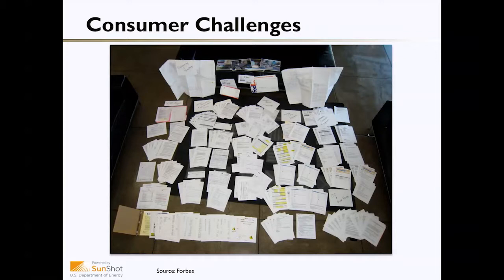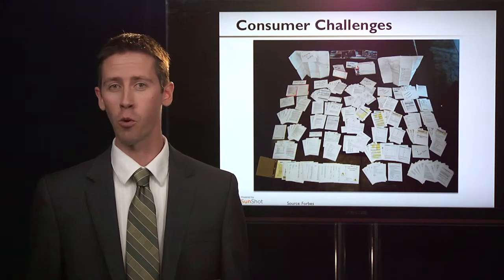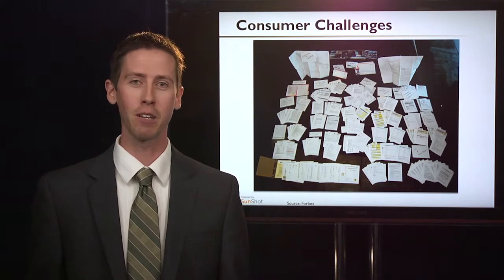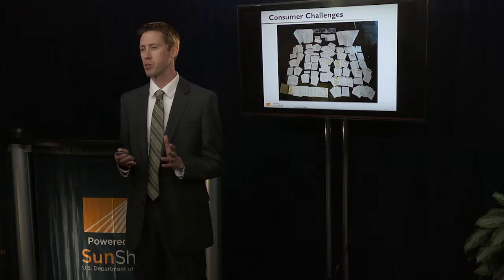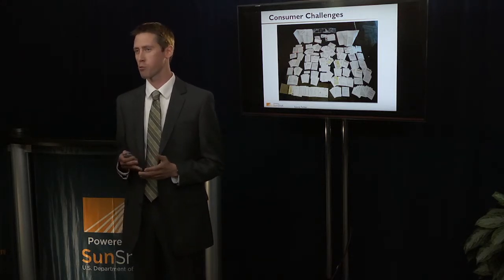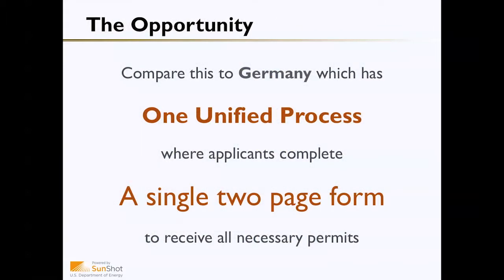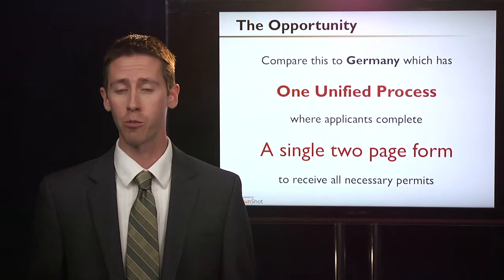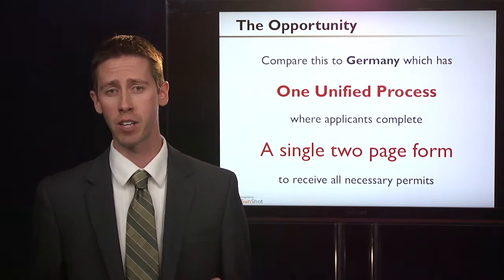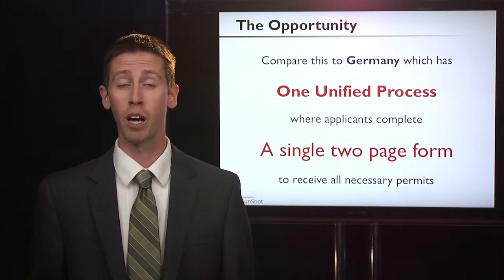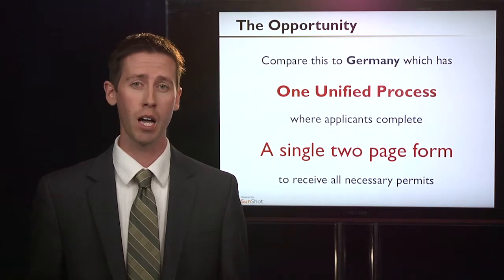This is an example of the paperwork associated with a PV system installed in California. As you can see, it's numerous forms, and a mistake can be made on any one of those forms. This isn't just local permitting — it also includes some federal forms and federal tax credit forms. It's a complicated process. When you compare this to Germany's unified process, there is one two-page form that receives all necessary permits — simplified, standardized, and streamlined, which saves time and money.